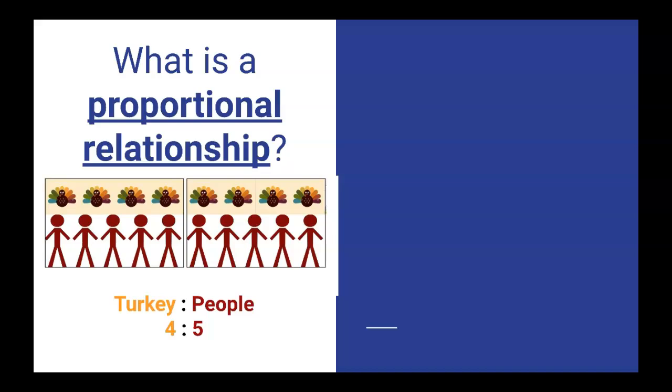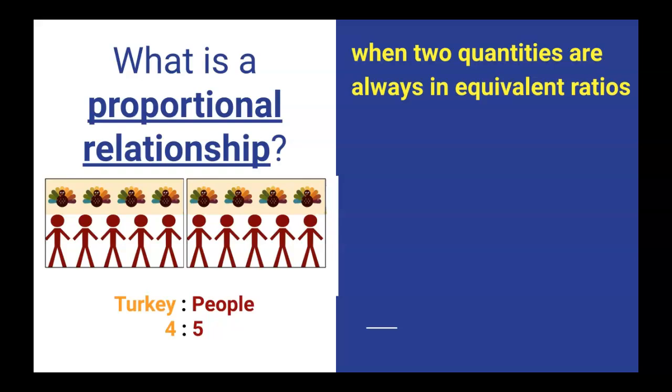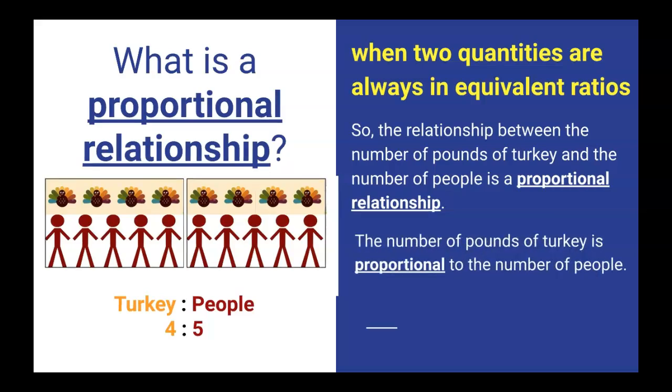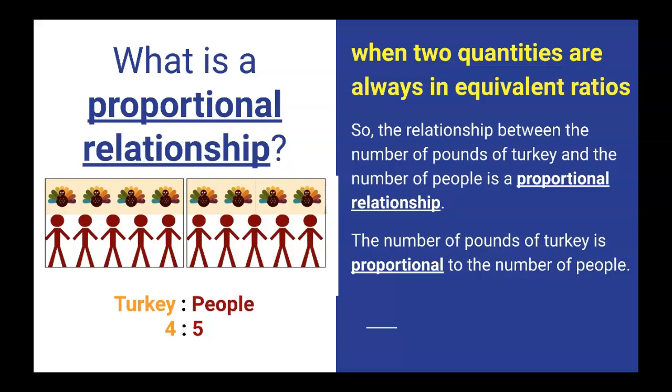So what is a proportional relationship, this big idea that we're doing today? It's when two quantities are always in equivalent ratios. In this situation, the relationship between the number of pounds of turkey and the number of people is a proportional relationship. The number of pounds of turkey is proportional to the number of people.